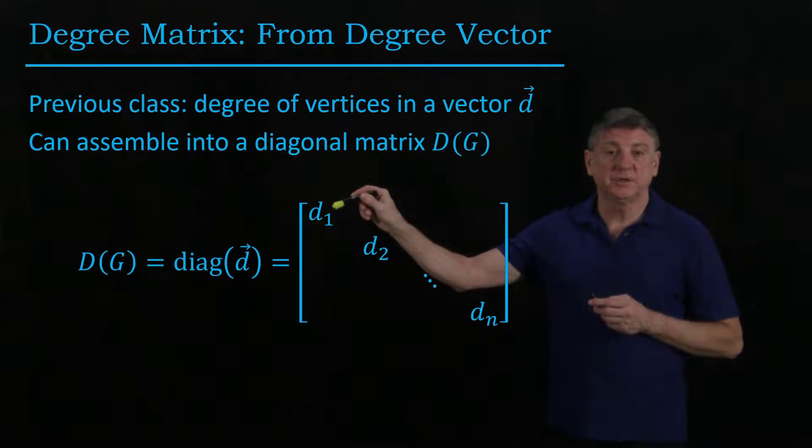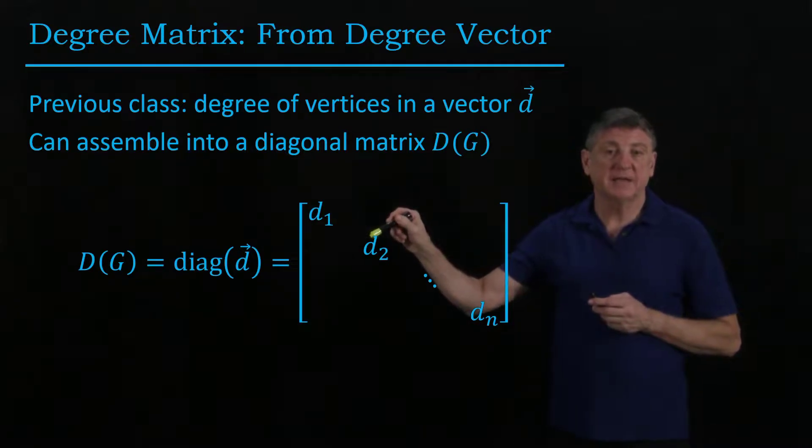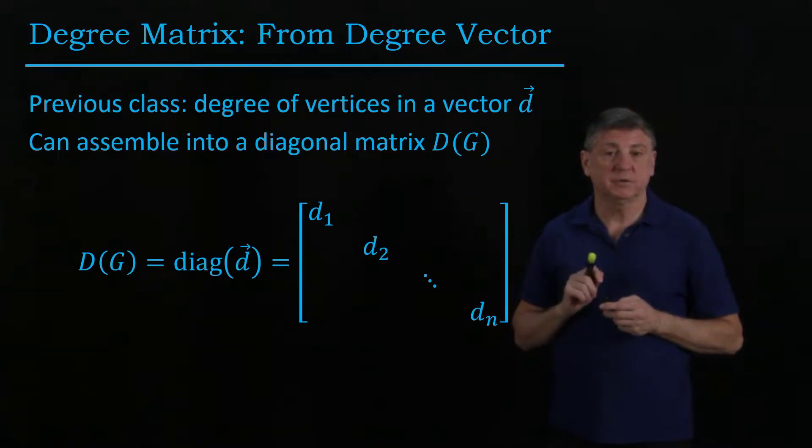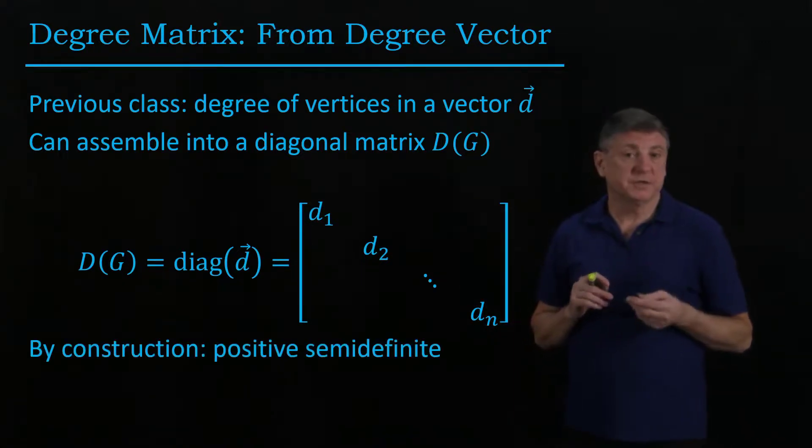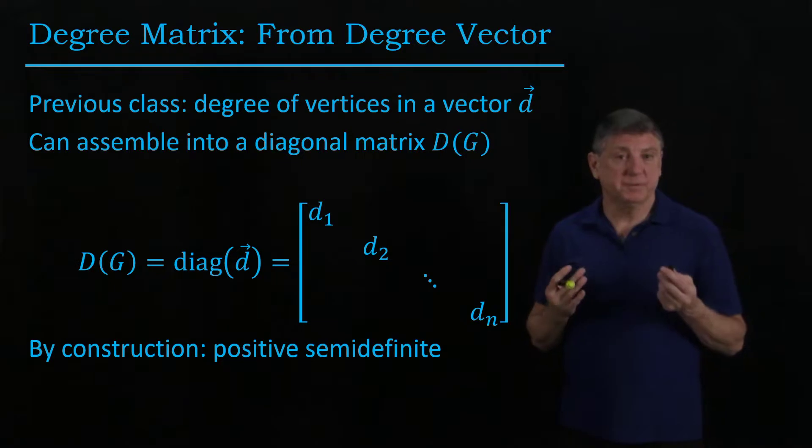What we do is we put the degree of each vertex as the diagonal entry and everything else in this matrix is zero. By construction, this is a symmetric matrix.